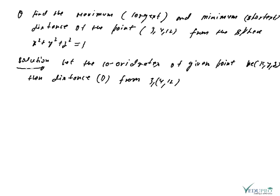Now we are taking one more question: find the maximum (longest) and minimum (shortest) distance of the point (3, 4, 12) from the sphere x² + y² + z² = 1.